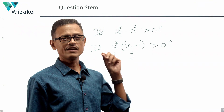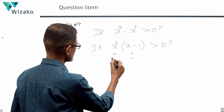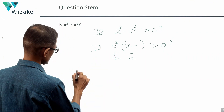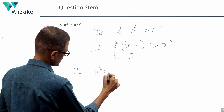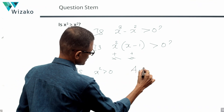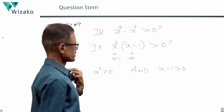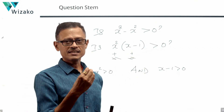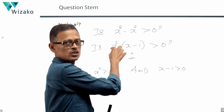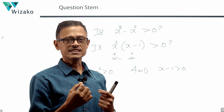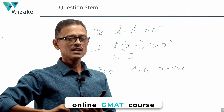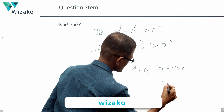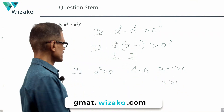The square of a real number can never be negative, so X squared cannot be negative — that possibility is ruled out. So the question boils down to: Is X squared greater than 0 AND is X minus 1 also greater than 0? Since X squared can never be negative, they are essentially asking: are X squared and X minus 1 both simultaneously positive? This translates to: Is X greater than 1?